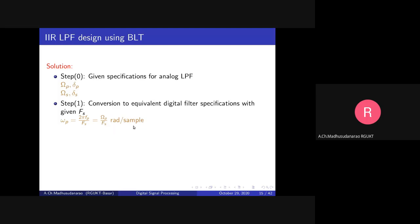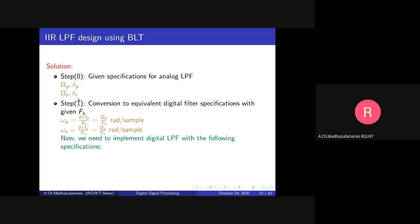The digital stopband cutoff frequency is omega_s = 2π × f_s / fs, or capital Omega_s divided by fs. This gives us the digital filter specifications: (omega_p, delta_p) and (omega_s, delta_s). We need to implement the digital low pass filter with these specifications using bilinear transformation. But before that we need to go for pre-warping.